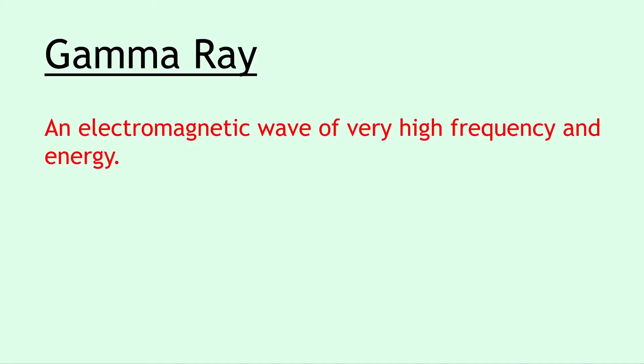Next we have the beta particle, and a beta particle is simply a fast-moving electron. The next definition is for a gamma ray. You need to know that a gamma ray is an electromagnetic wave of very high frequency and energy.